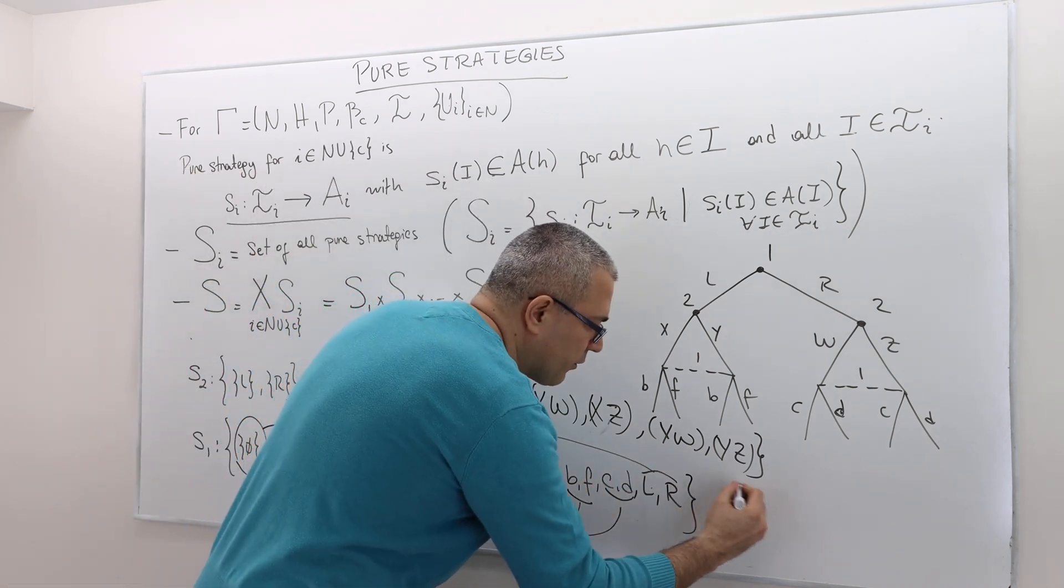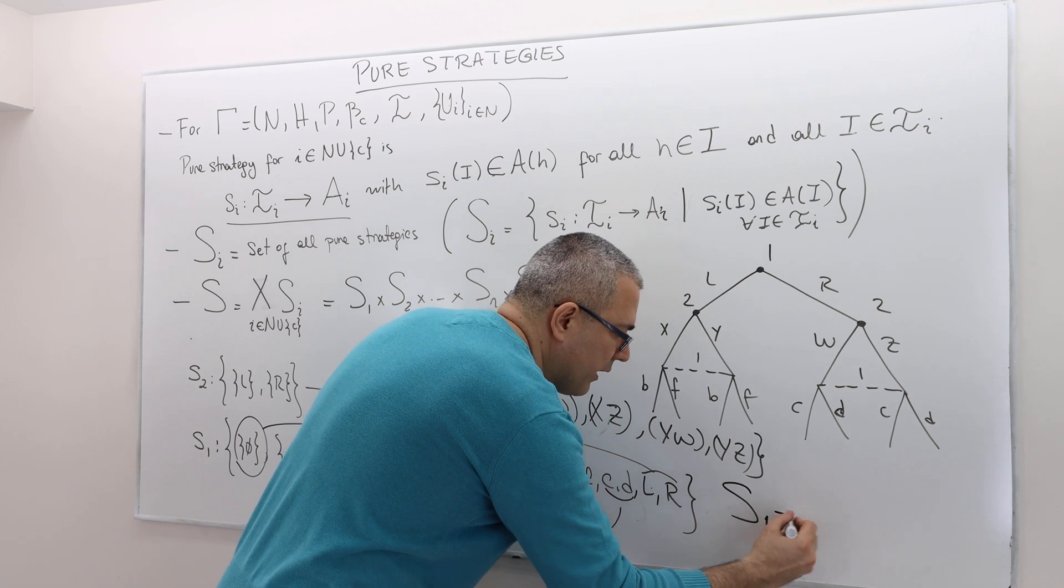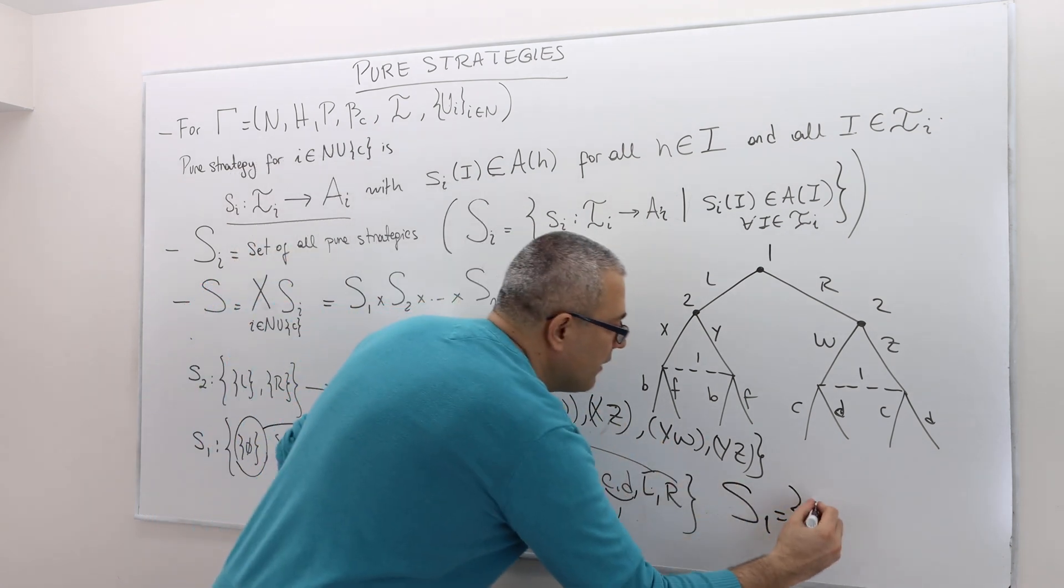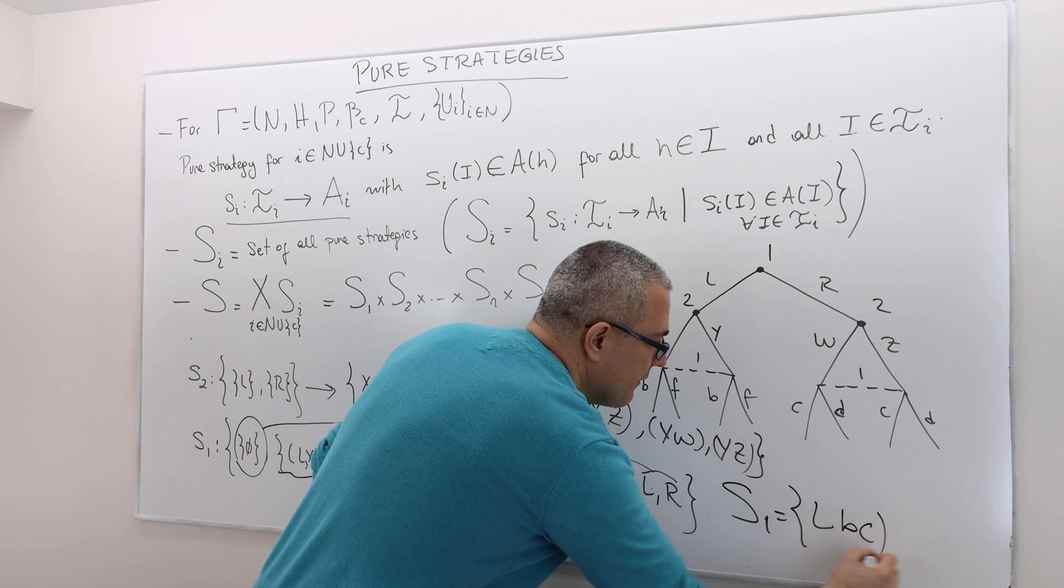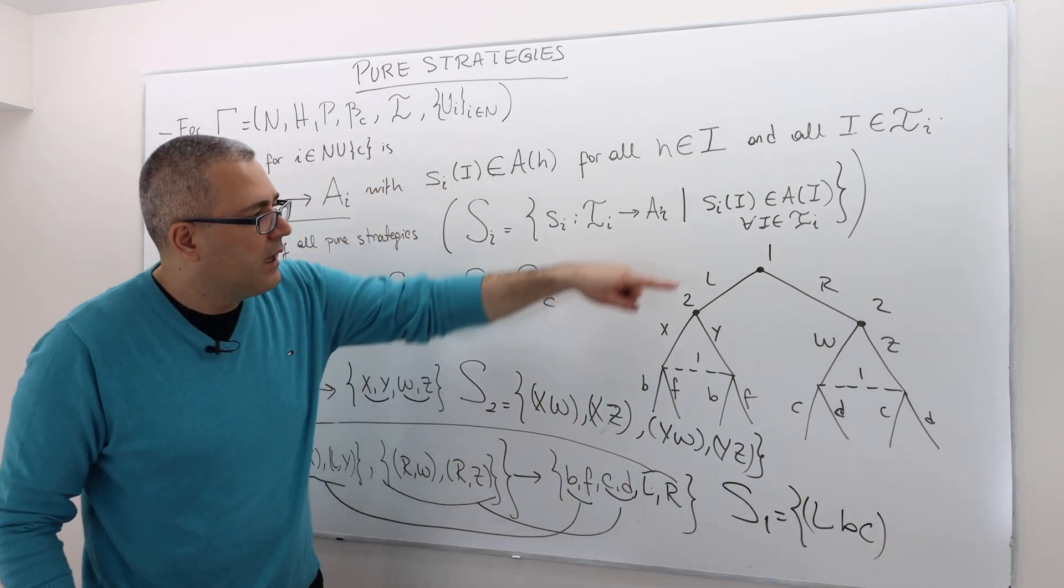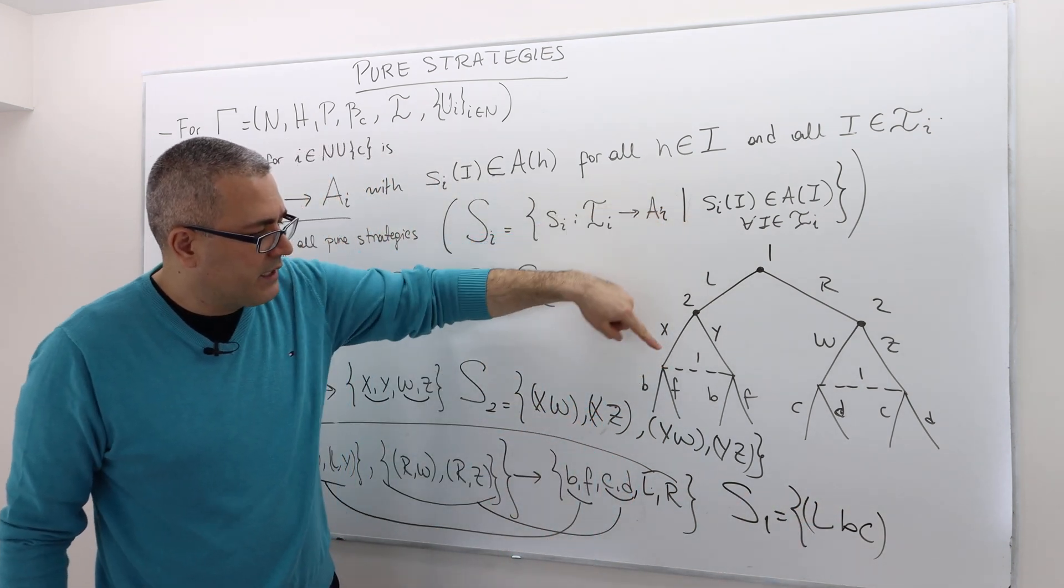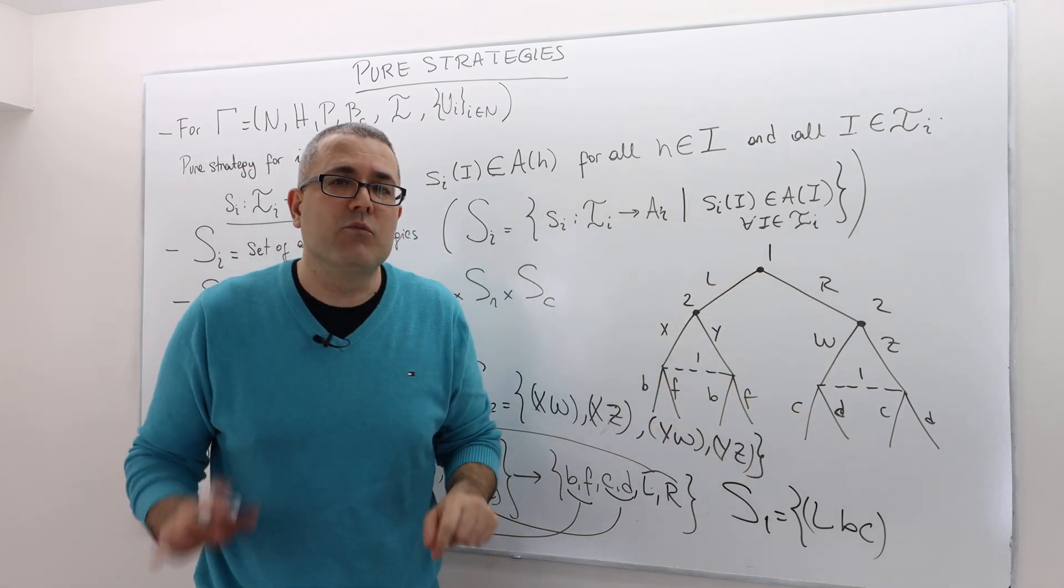So one potential strategy for player one is L, B, C. Meaning, he's going to play left here, he's going to play B here, and he's going to play C here.